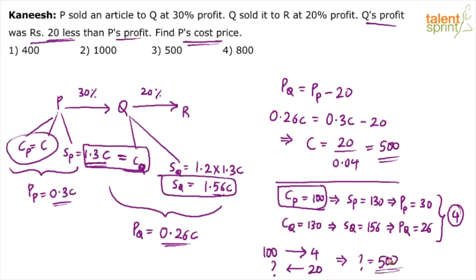Same concept — instead of assuming C as the cost price, we assumed 100, cutting down unnecessary steps. Either approach gives the same answer of 500.